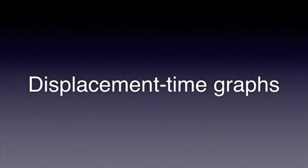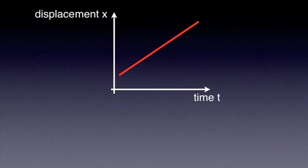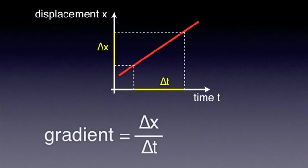Let's start with displacement-time graphs. The gradient of a displacement-time graph gives us the velocity. Let's see why. Consider a simple one-dimensional motion described by the graph shown on the screen. If we consider two points on the graph, the gradient of the graph represents the displacement of the moving object during the time interval delta t, divided by the time interval delta t.